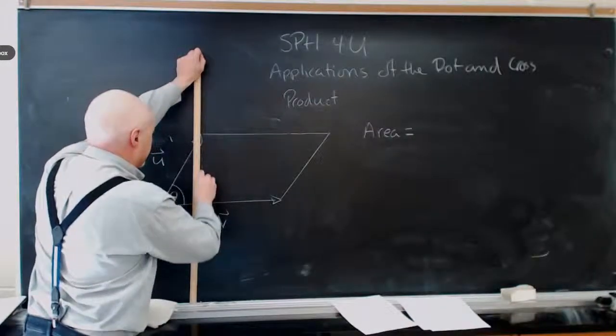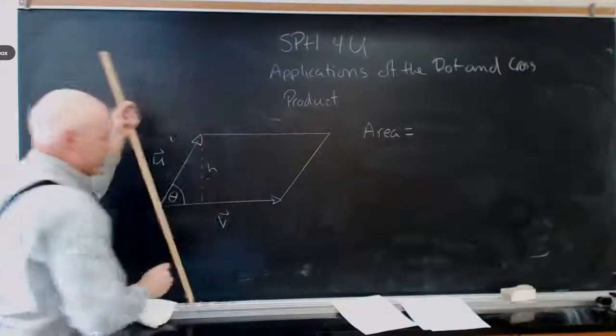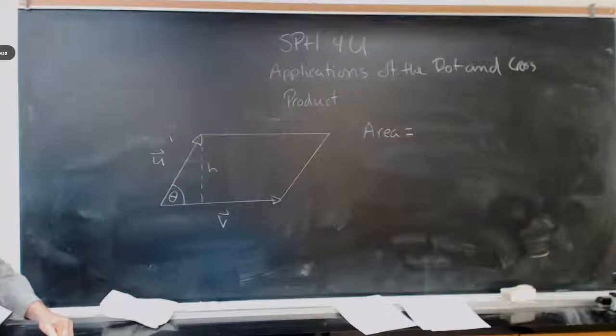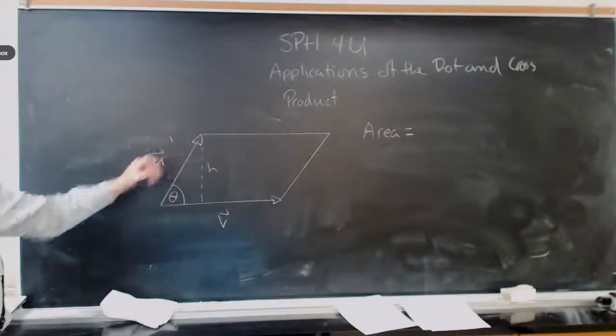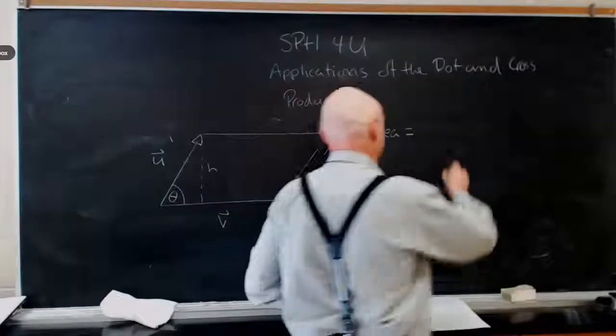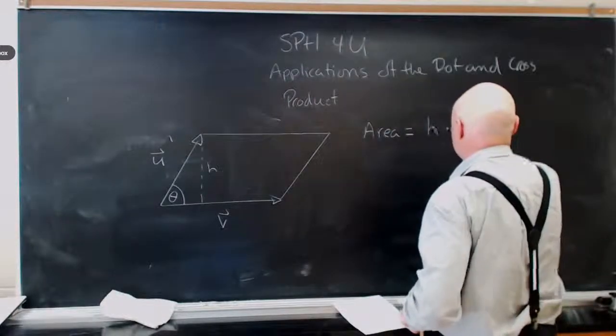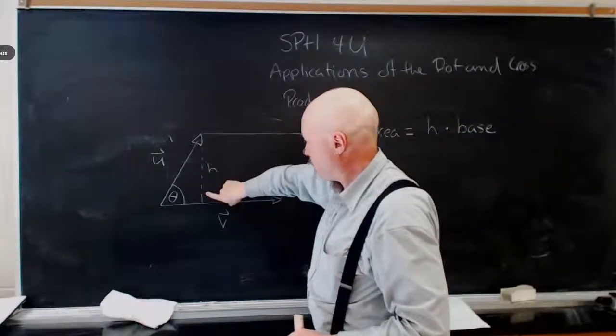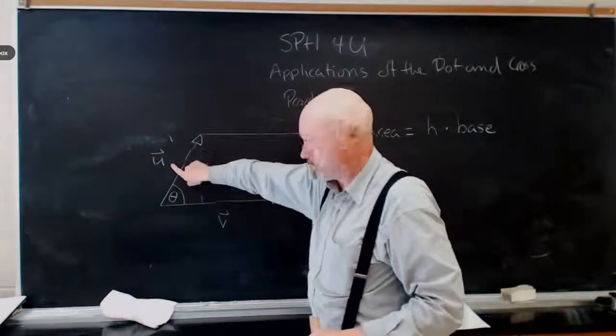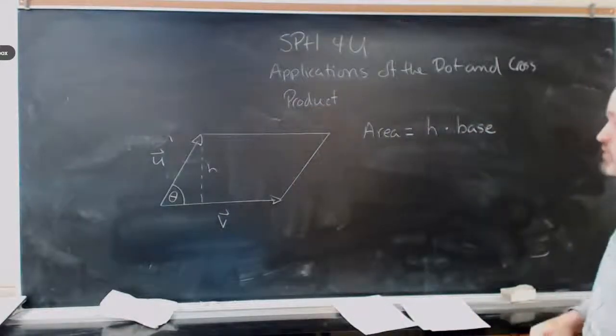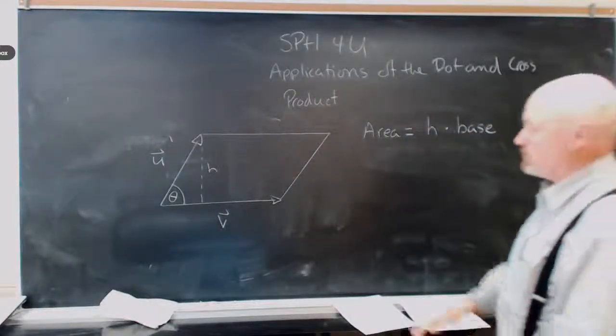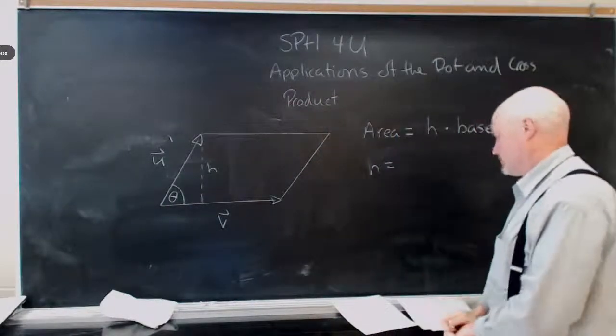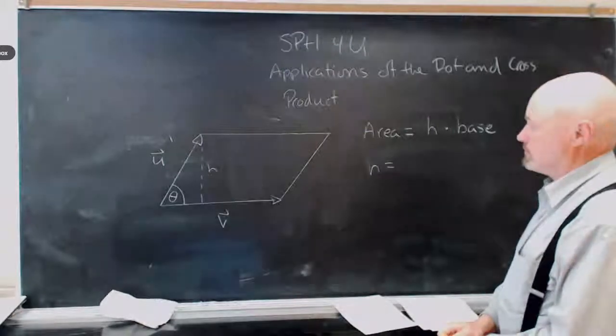So it's not exactly length times width. Do you know what it actually is? So it's actually height times base. So that tells us the area of a parallelogram. Because it's a little bit squashed, we can't go with length times width. So if I want to find the height but I know the size of u, what's the formula for finding height based on theta?